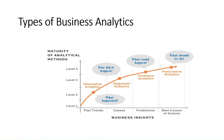Descriptive analytics analyzes past trends and answers the question: what happened? It conducts analysis over historical data, summarizing past events such as past sales data, social media usage, and social media engagement data. Reporting the general trends in historical data is one of the key examples of descriptive analytics, which focuses on answering the question of what happened.